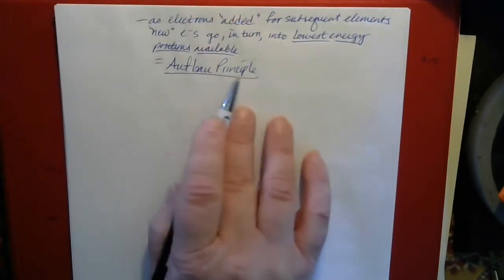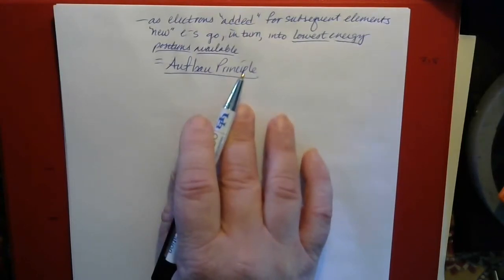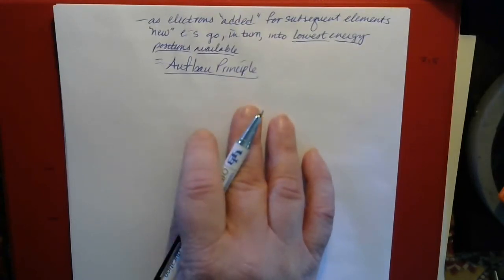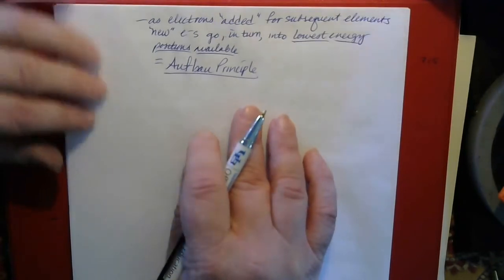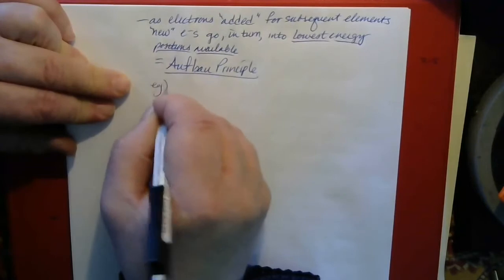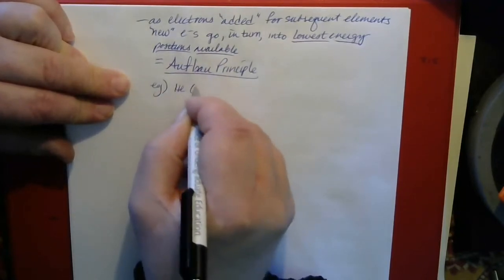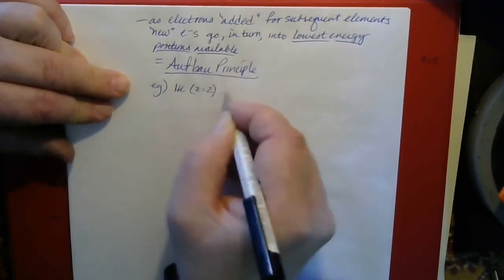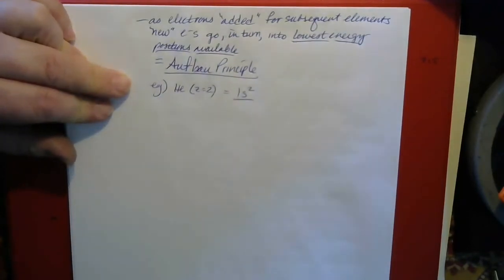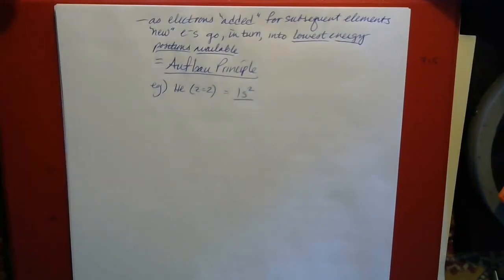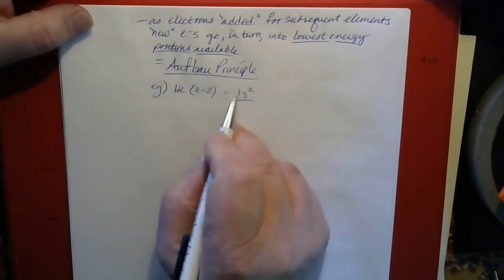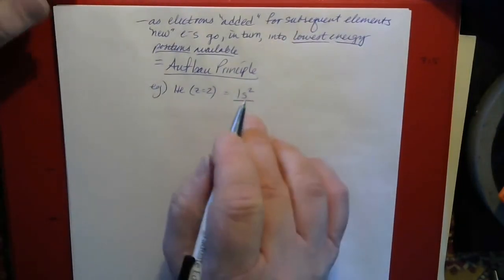You can call it the Aufbau principle if you like to sound really technical and highly educated, or you can just call it the building-up principle, which it's often called also. Helium, with two electrons, would be written as 1s2, because the S orbital of the first shell can accommodate two electrons.